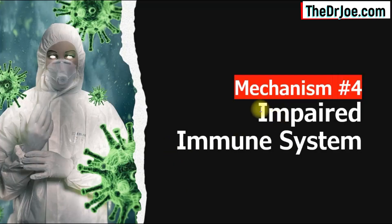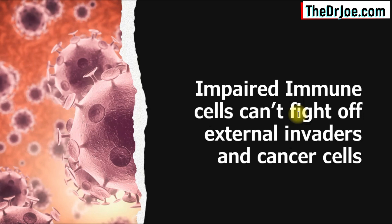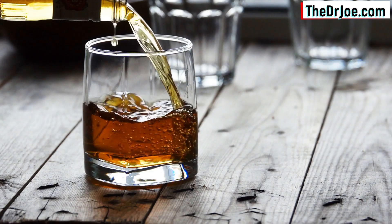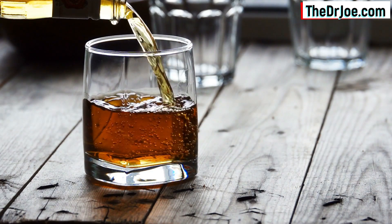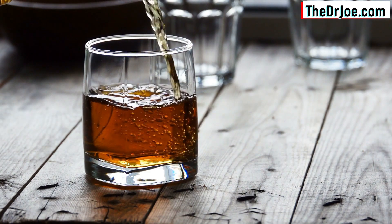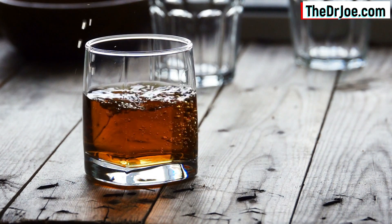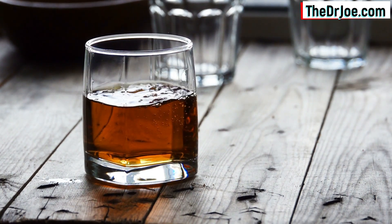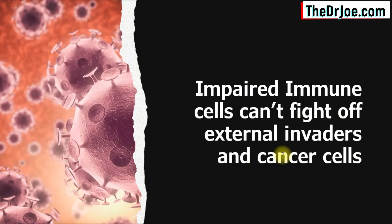Mechanism number four through which alcohol raises your risk of cancer has to do with an impaired immune system. When your immune system is impaired, your immune cells cannot fight off external invaders, and they also cannot mop up cancer cells. Because believe it or not, we all have cancer cells in our bodies — not a lot — but these cells don't stick around because immune cells go around and mop them up. However, when your immune cells are impaired, they're going to lack the power to mop up any cancer cells that may be floating around your body, and this is not good news.